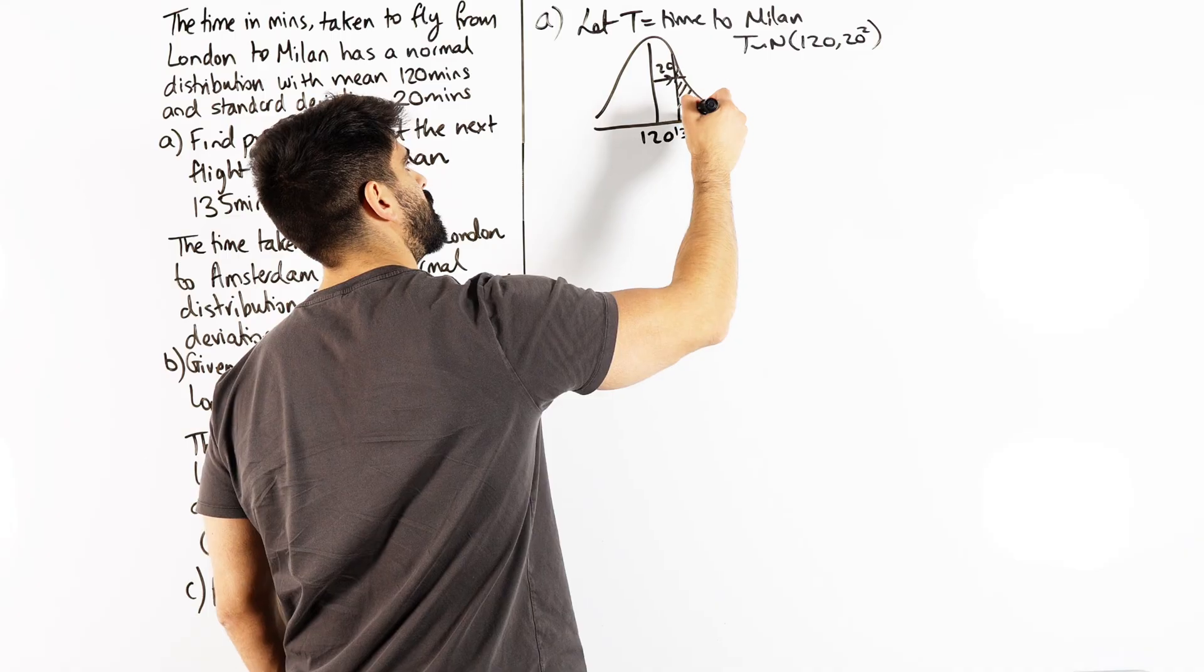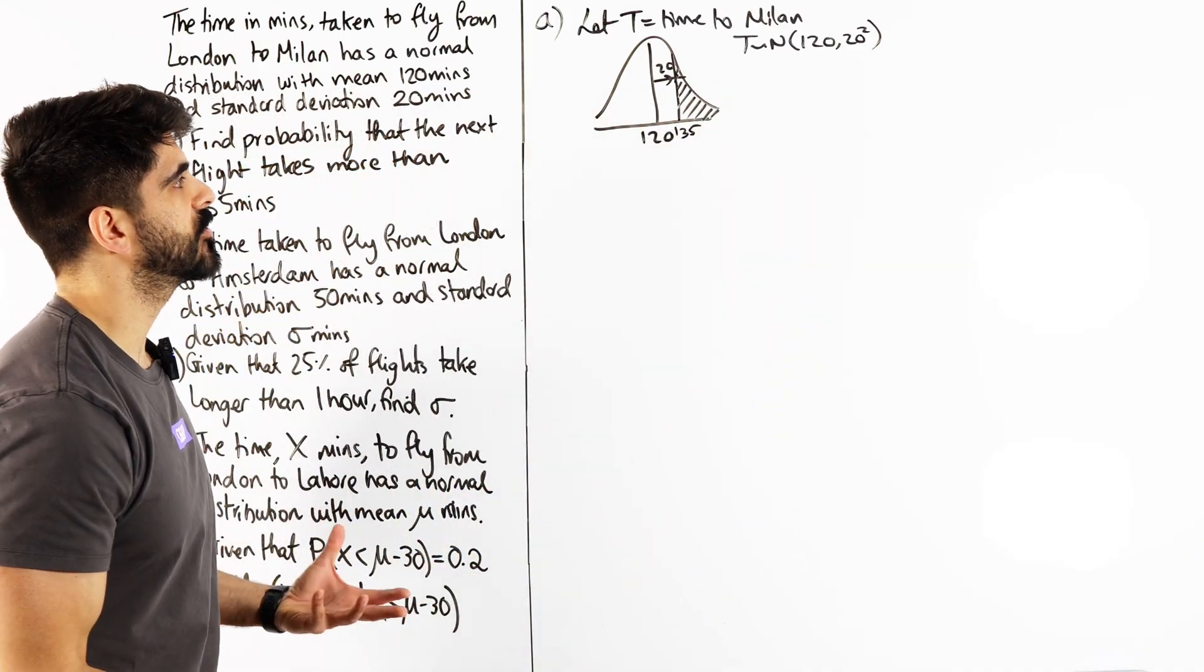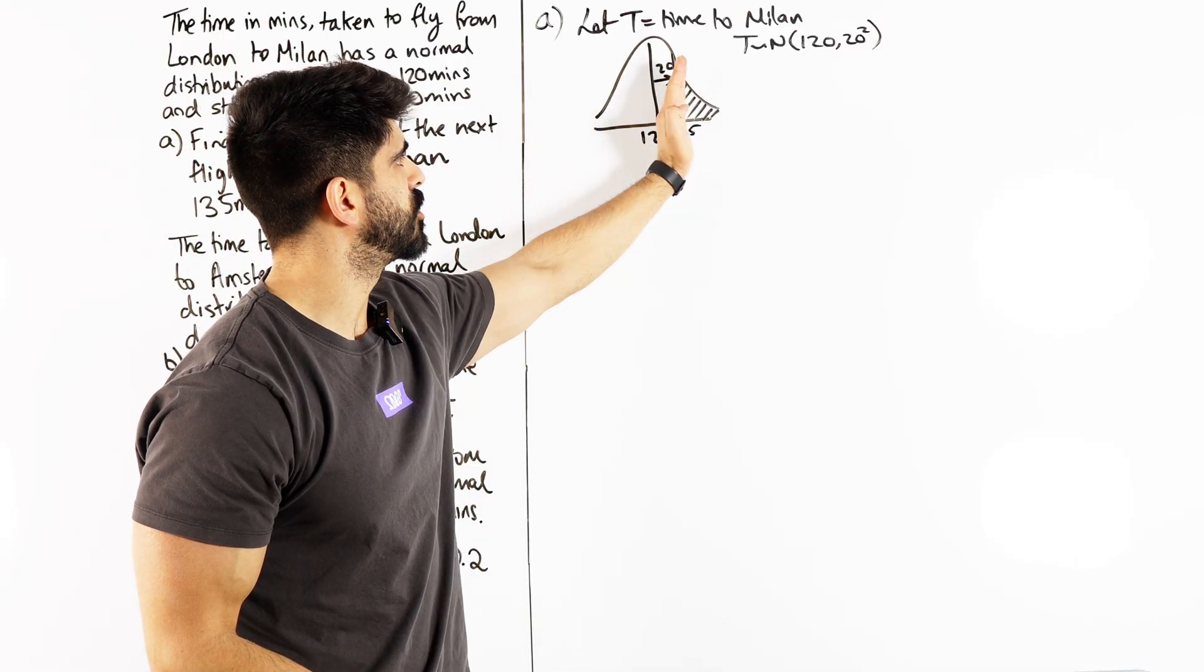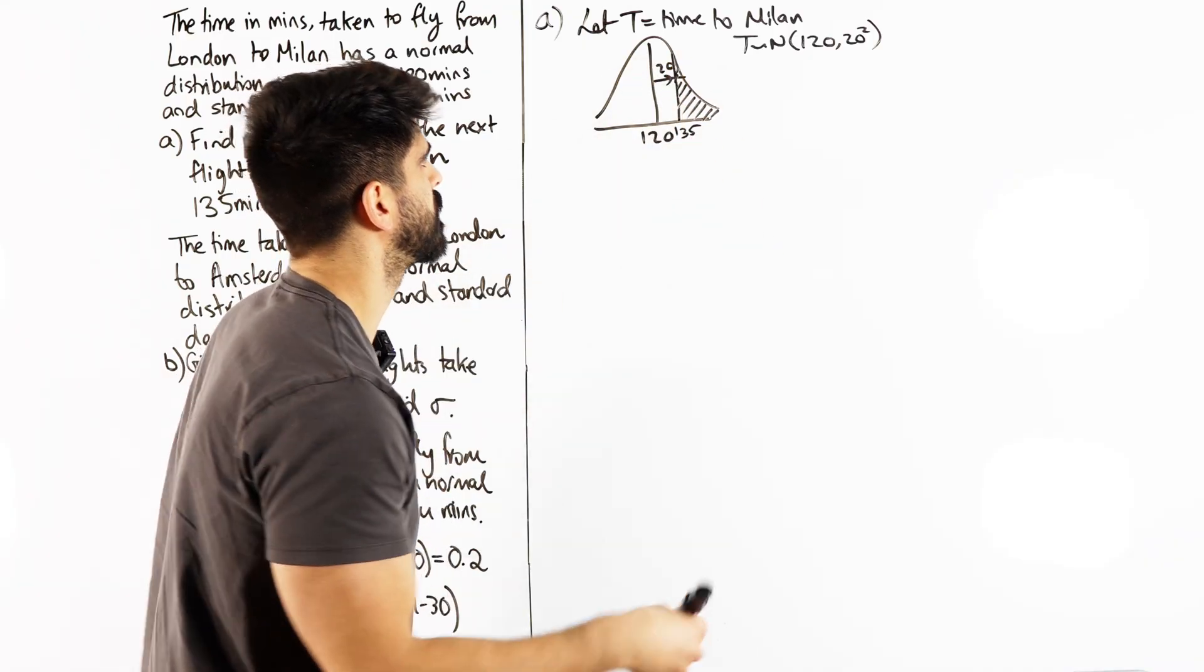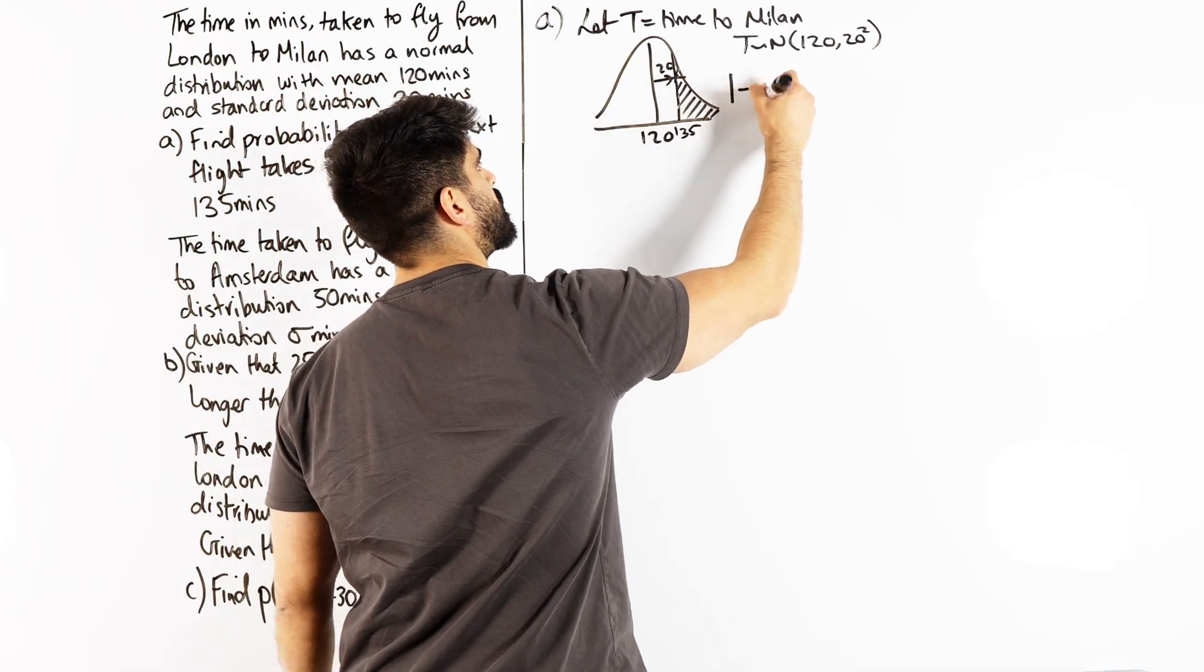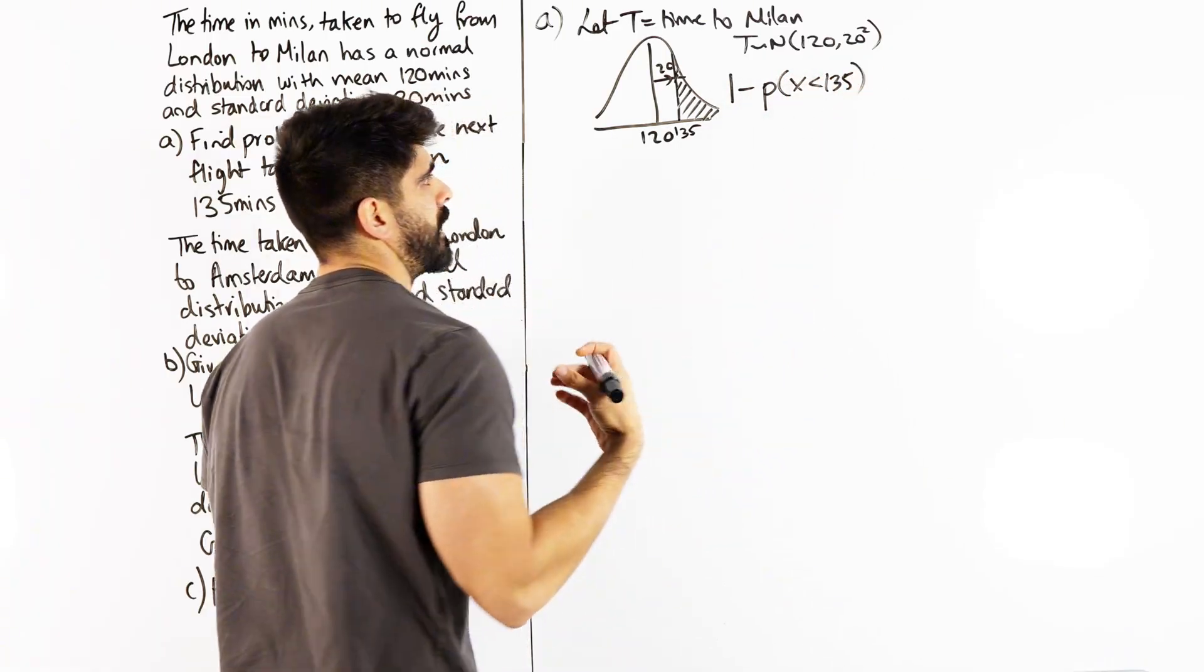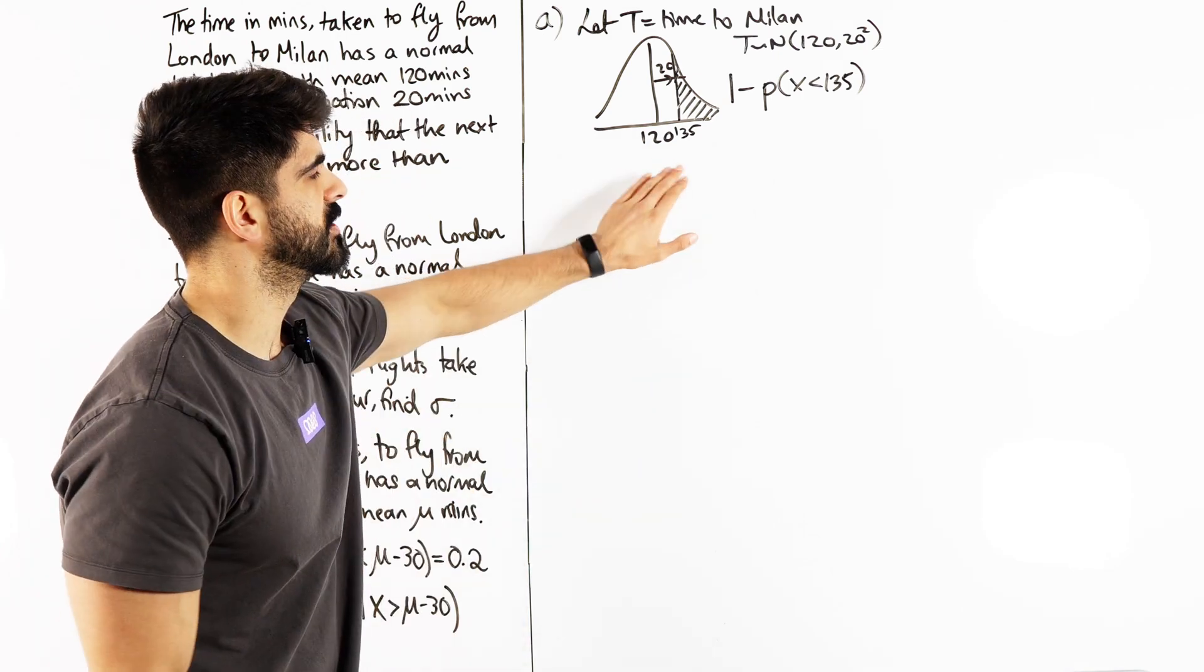So we need to write the cumulative statement here. In the calculator we can work out up to 135, and then subtract from 1 to get that remaining area. So you're going to do 1 minus the probability that x is less than 135. Now I'm not using phi here as I've discussed in previous videos because we're not talking about the z distribution.